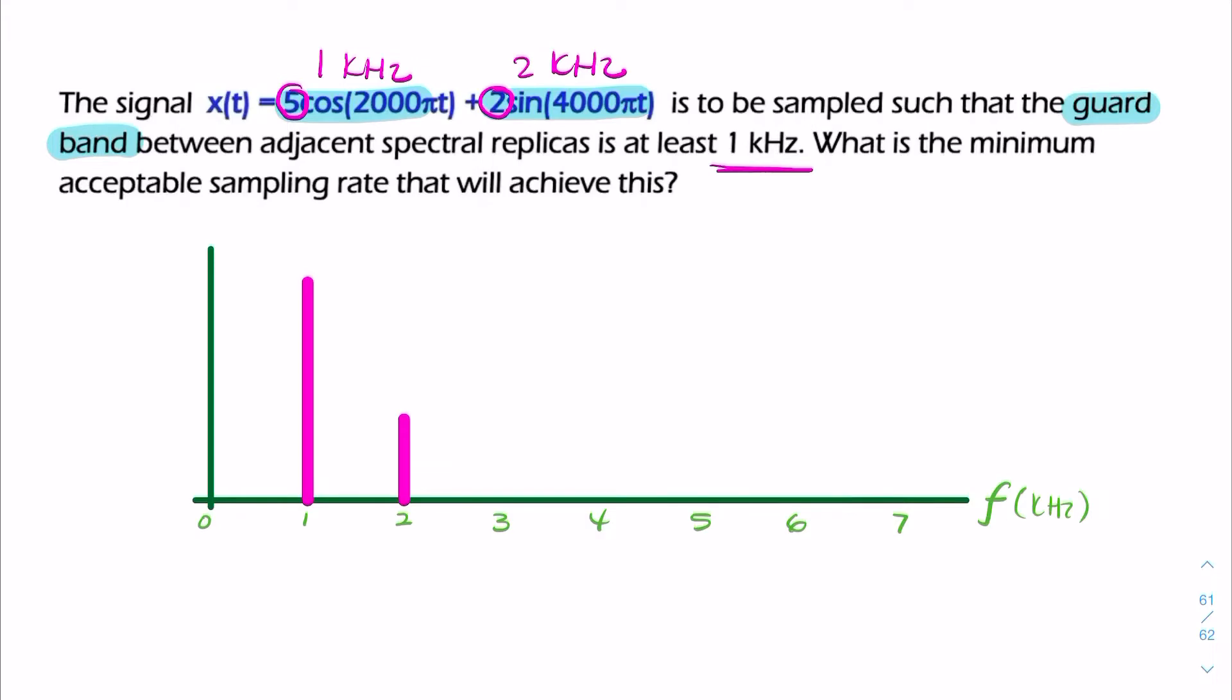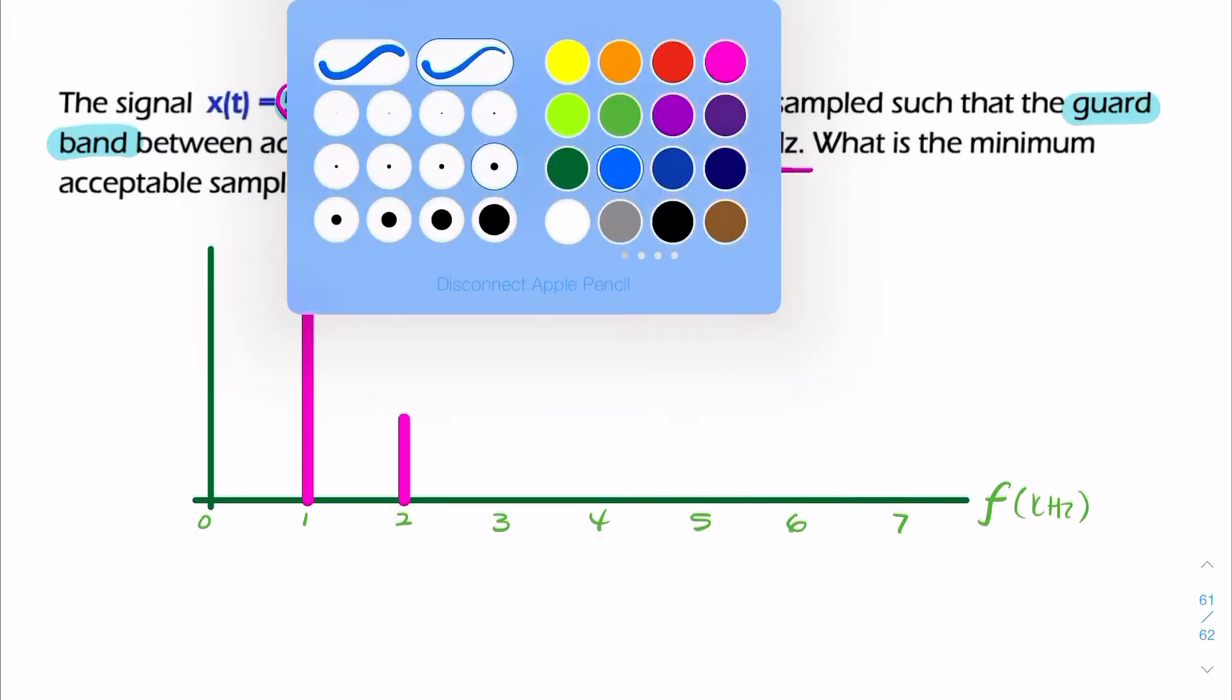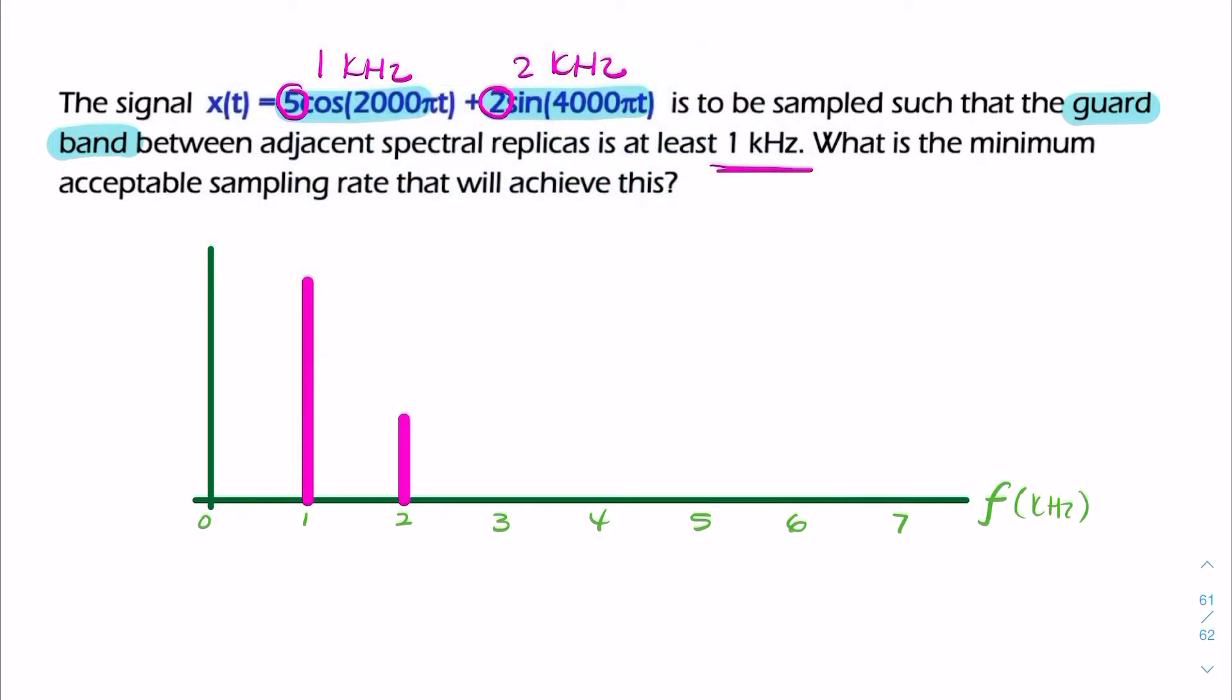Now, when you sample it, you then have a spectral replica. So let me illustrate the spectrum. The spectrum might look something like this. So this is just to imagine the shape of the spectrum. So we would imagine a similar kind of shape, something that looked something like this.